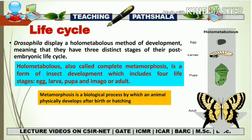This slide contains additional information regarding Drosophila. Drosophila displays a holometabolous method of development, meaning they have distinctive stages of their post-embryonic life cycle. Holometabolous development, also called complete metamorphosis, is a form of insect development that includes four life stages: egg, larva, pupa, and imago (adult). The egg converts to larva, larva to pupa, and pupa finally to adult.